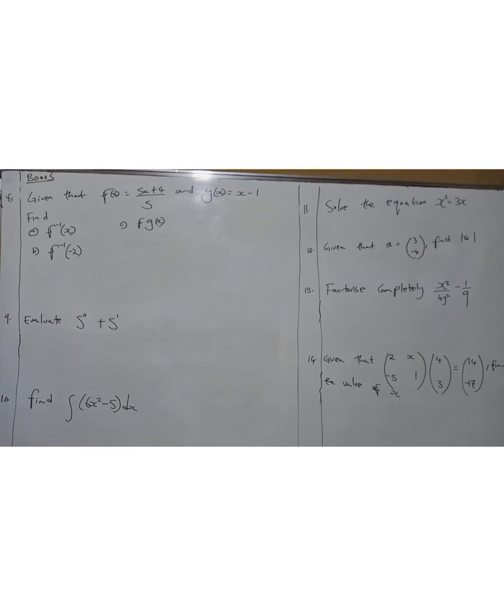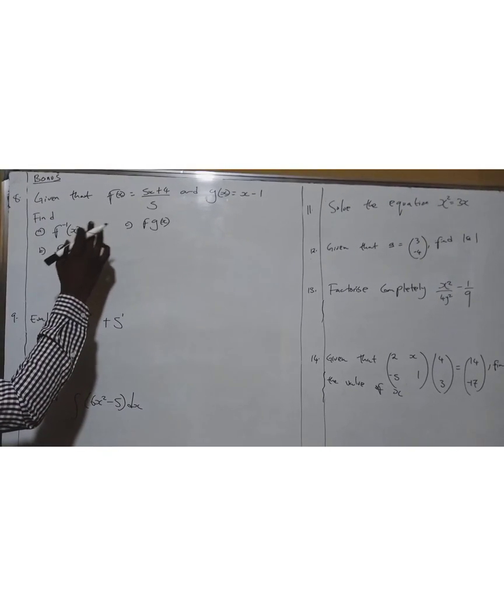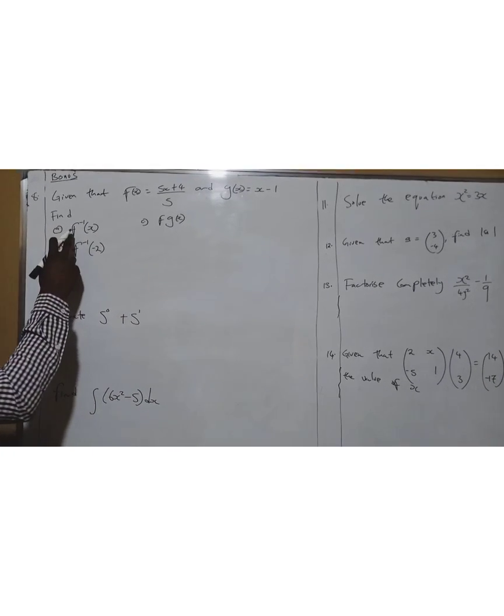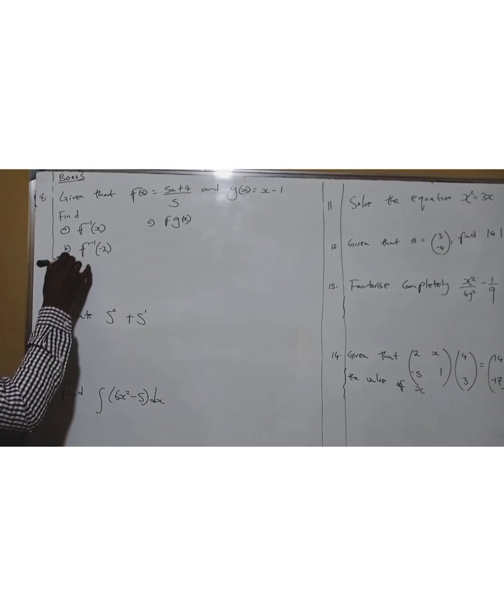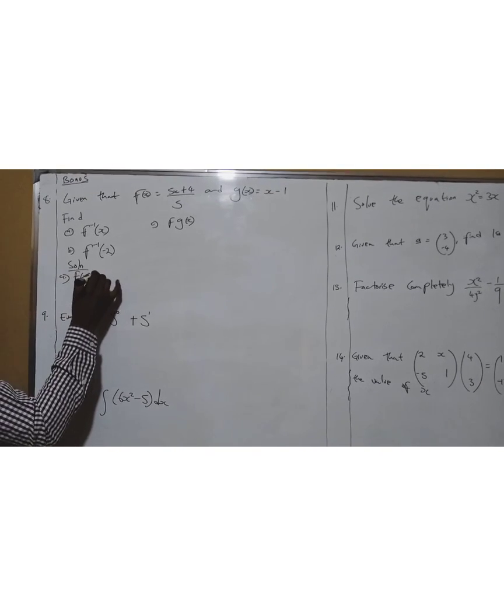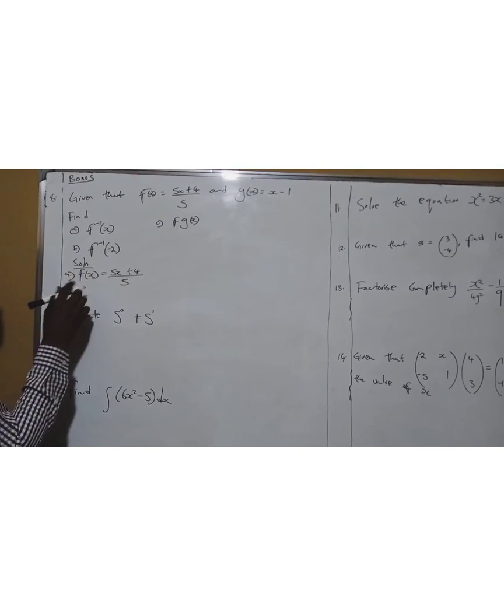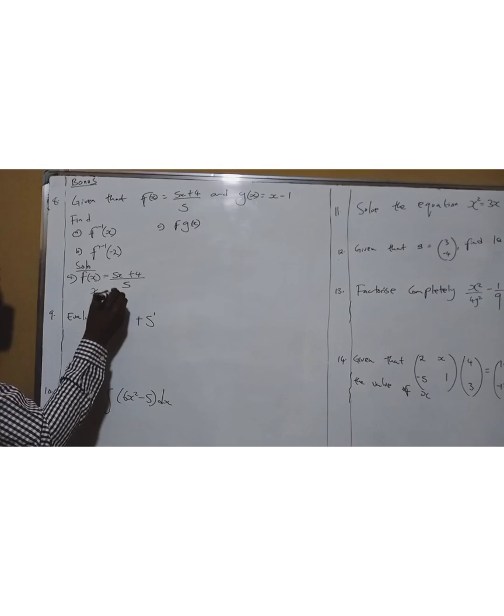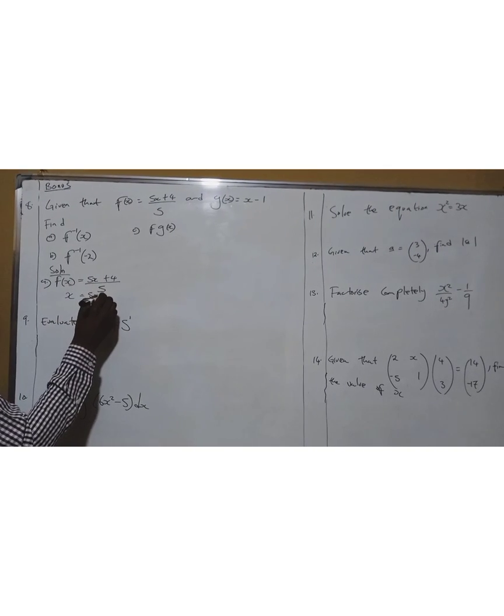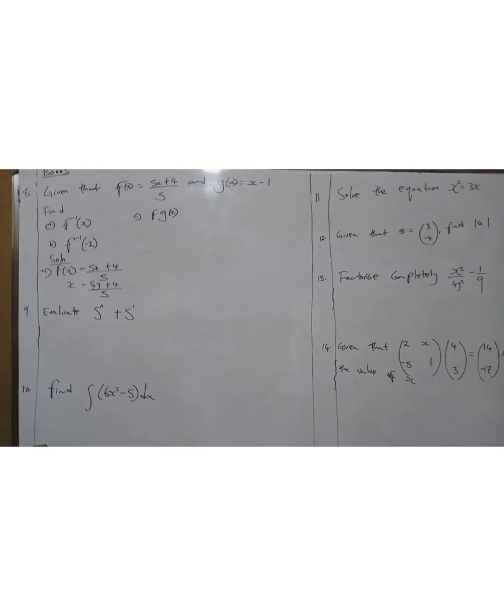Question eight: given that f(x) equals 5x plus 4 over 5, and g(x) equals 5x minus 1, find f inverse. For f inverse, you're going to write your f(x) first, your original 5x plus 4 over 5. Have you seen this f(x) becomes x? So x equals this f(x) becomes x, this x after equals becomes y plus 4 over 5.